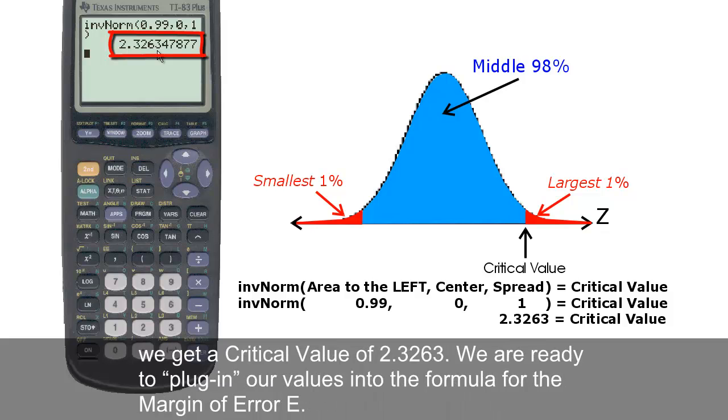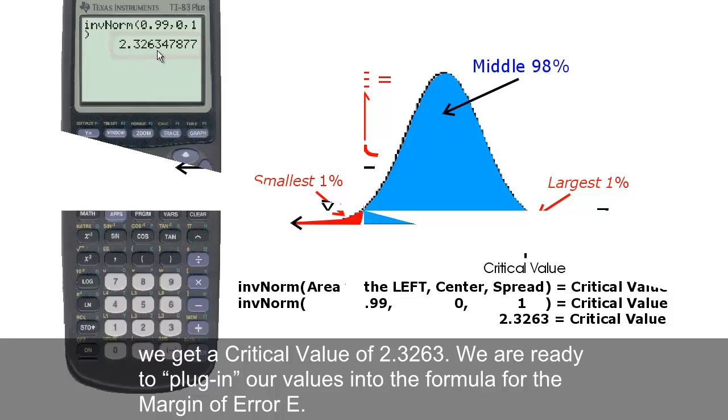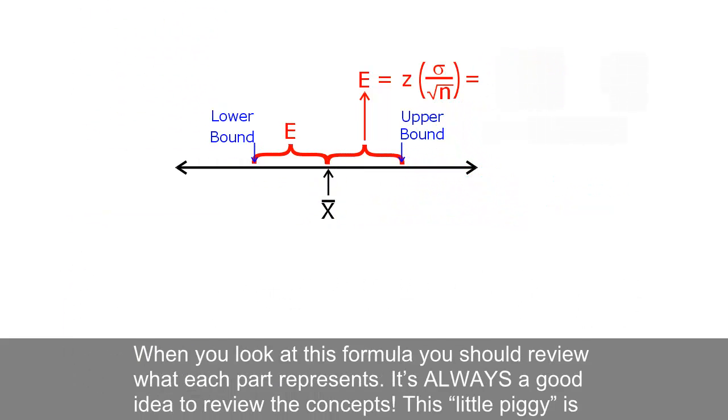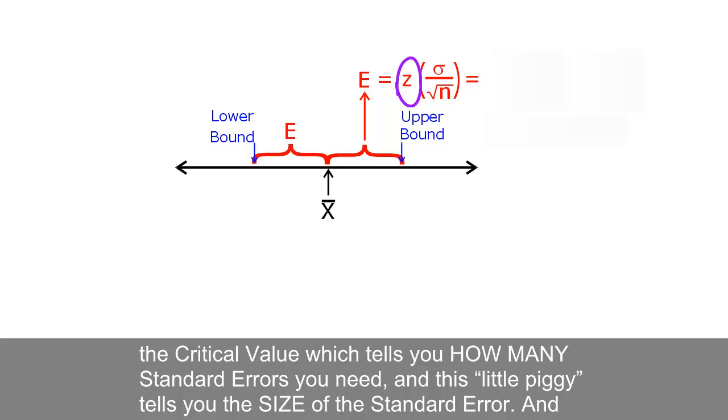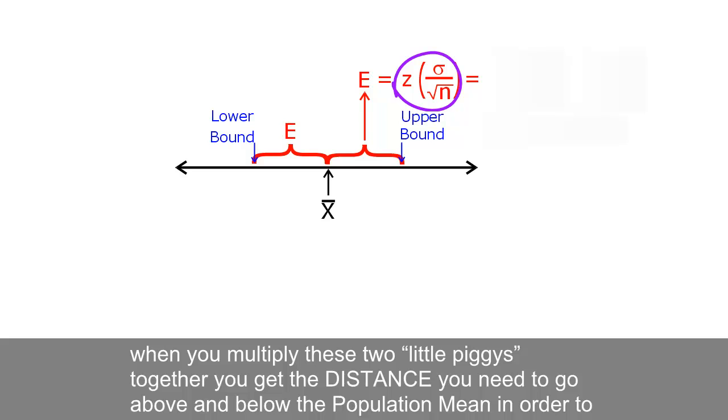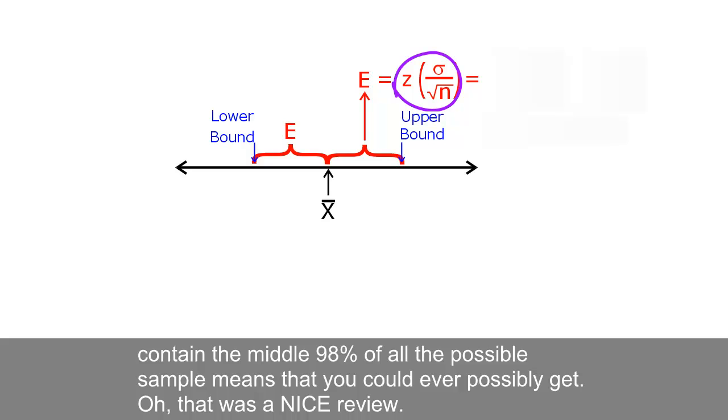If we round off at the fourth decimal place, we get a critical value of 2.3263. We are ready to plug in our values into the formula for the margin of error E. When you look at this formula, you should review what each part represents. It's always a good idea to review the concepts. This little piggy is the critical value, which tells you how many standard errors you need. And this little piggy tells you the size of the standard error. And when you multiply these two little piggies together, you get the distance you need to go above and below the population mean in order to contain the middle 98% of all the possible sample means that you could ever possibly get. Oh, that was a nice review.